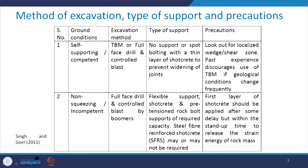Coming to various methods of excavation, type of support, and precautions to be taken during excavation for different ground conditions. The second column deals with the ground conditions, followed by the excavation method, the type of support, and the precautions to be adopted. We discussed in the previous class that the first ground condition was self-supporting or competent ground. The excavation method in this case can be TBM, which is tunnel boring machine, or full face drill and controlled blast. No support is required, or spot bolting with a thin layer of shotcrete to prevent widening of the joints can be installed.